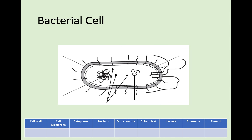Moving on to bacterial cells, which looks a bit different from what we have looked at before. It again has a cytoplasm, which is just a space between all the other cell organelles. There is a cell membrane in this also. And instead of a nucleus, bacterial cells have rings of genetic material that are called plasmids. If you are asked to describe what sort of cell this must be, straight away you will know it is a bacterial cell because it contains a plasmid instead of a nucleus.